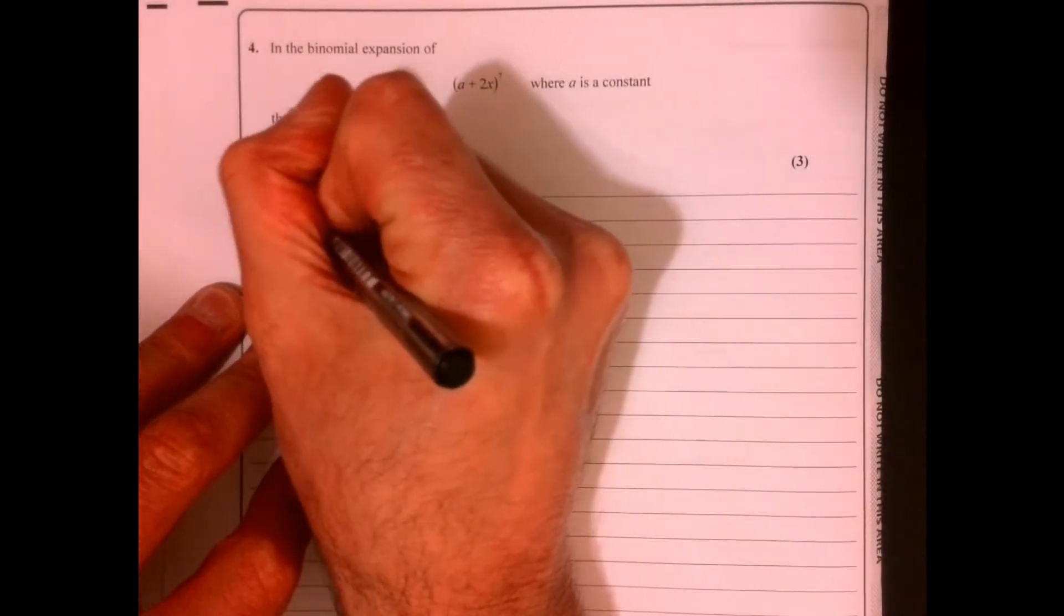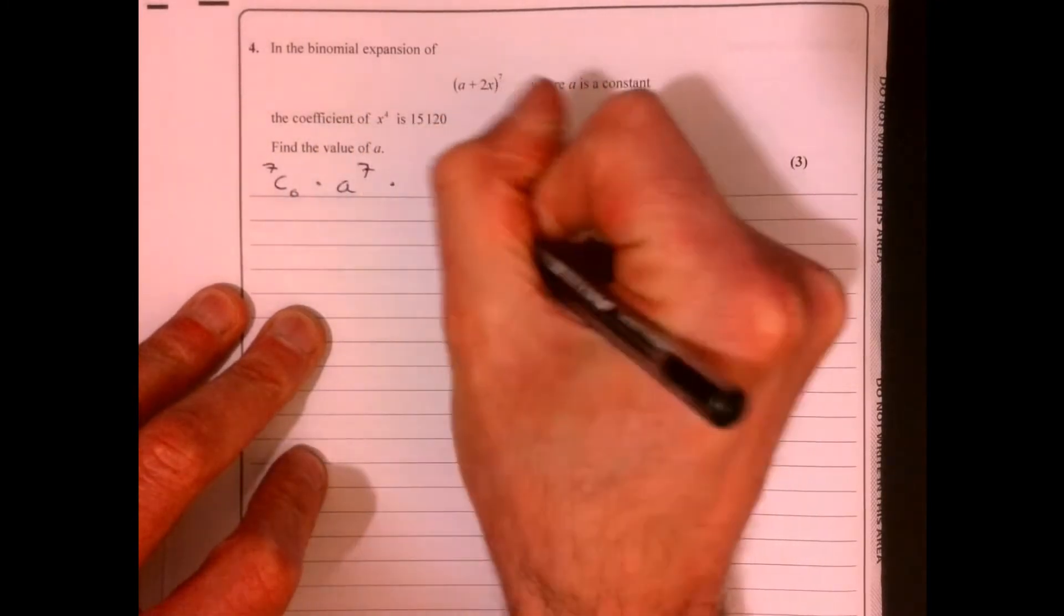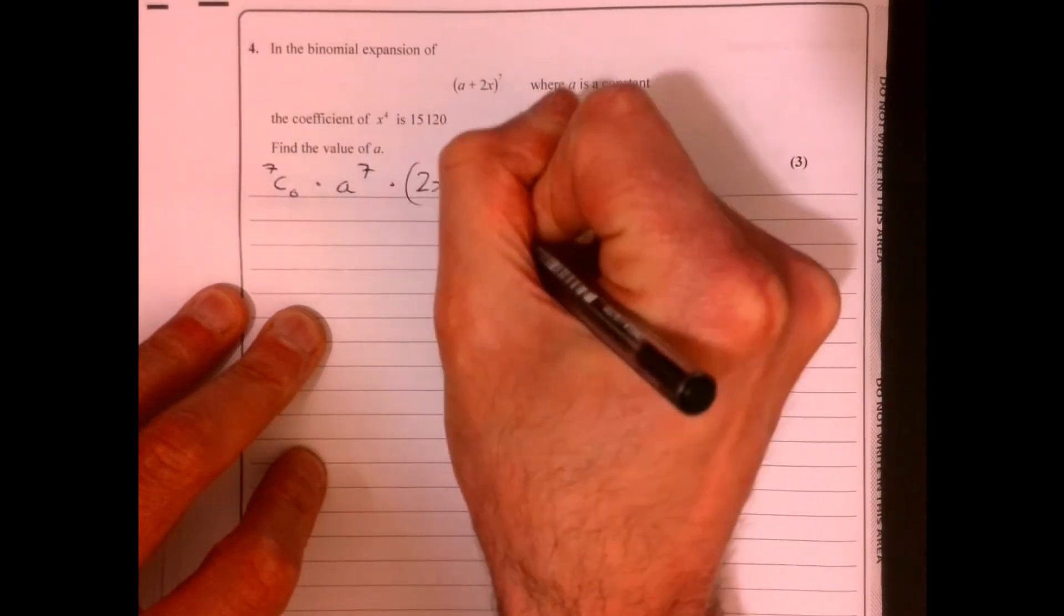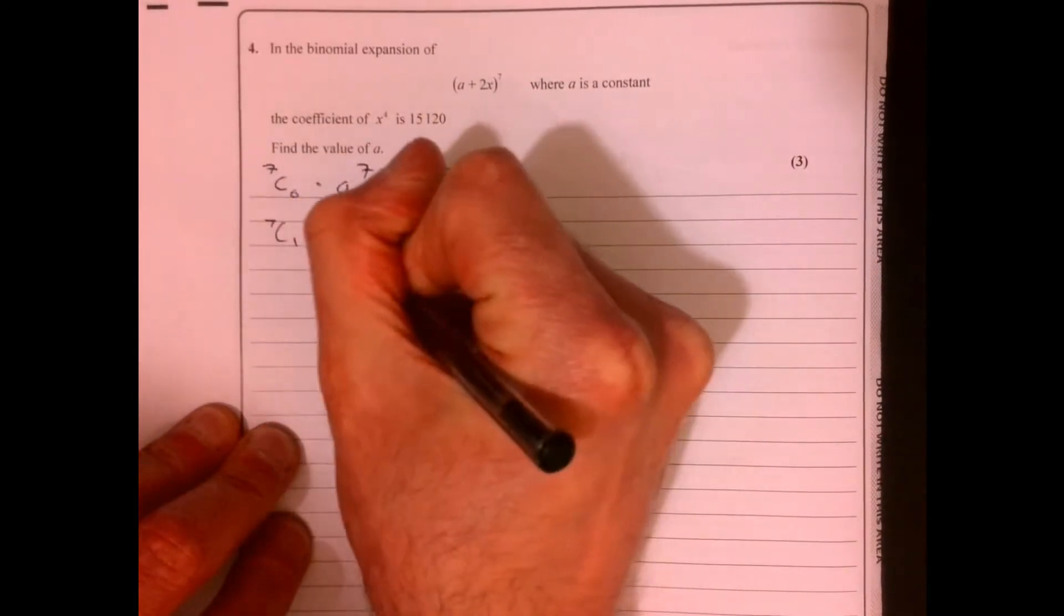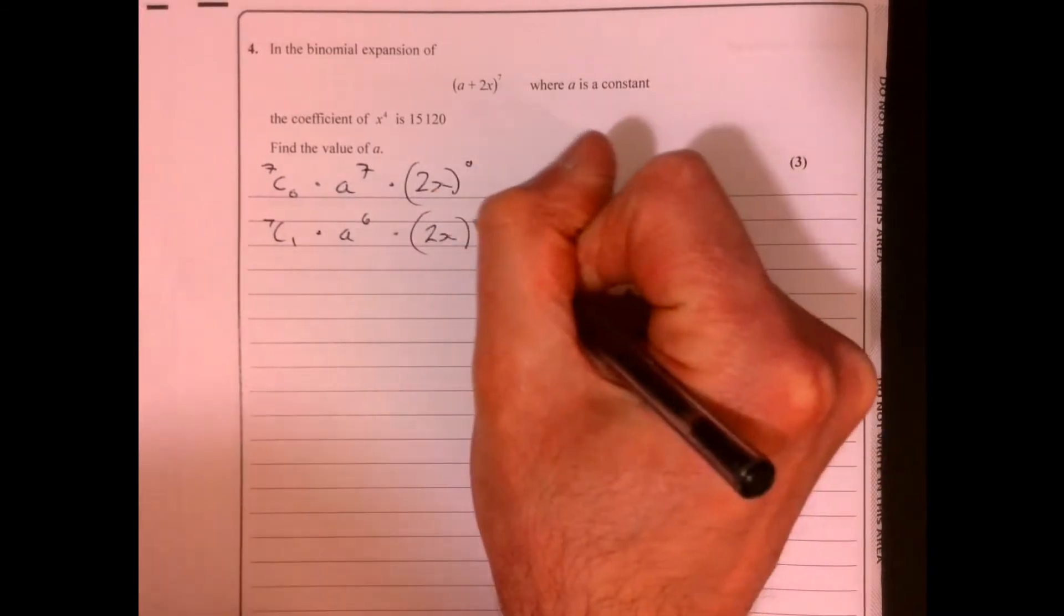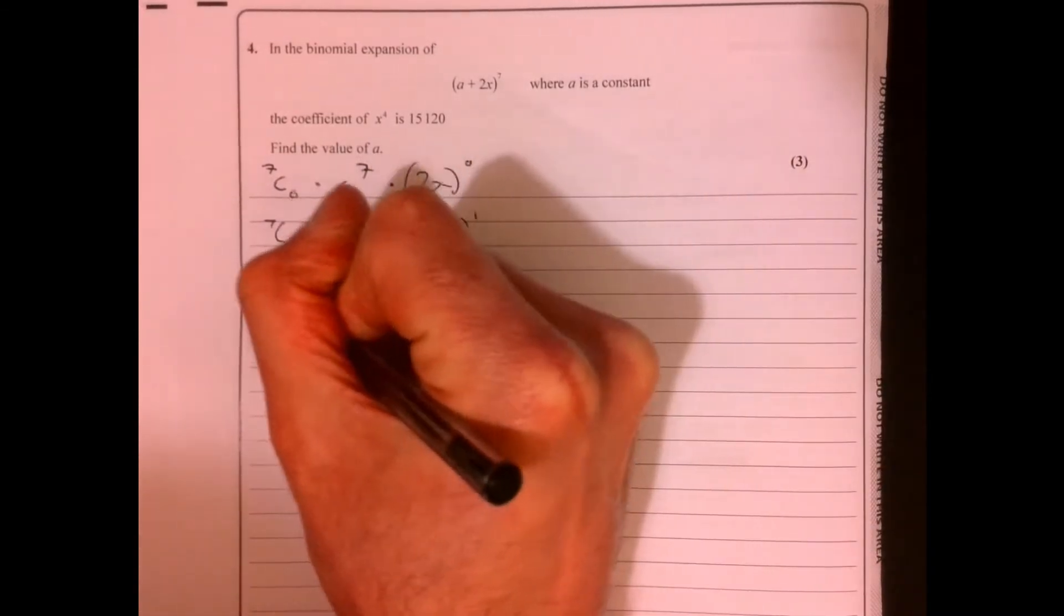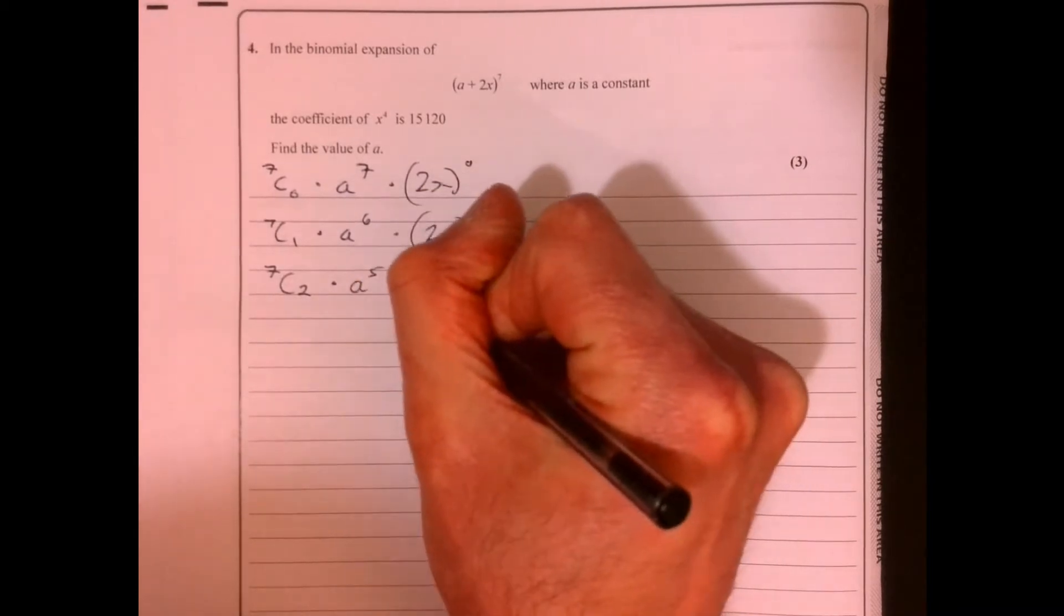Question four. So what I always do here is I always write the whole thing out, just imagine I was going to expand everything and don't really worry about working anything out for a second. This is how I would expand the whole thing. Normally it asks you for the first sort of three or four terms.